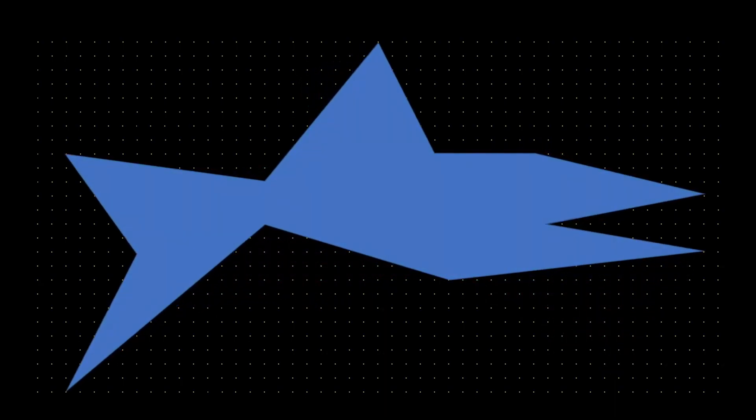But what happens when the lattice points become denser and the shape becomes more complicated like this strange green object? Or this bizarre blue thing? Or something crazy like this? No way! Breaking that down into rectangles and triangles is going to be a nightmare. We're going to need a different approach.